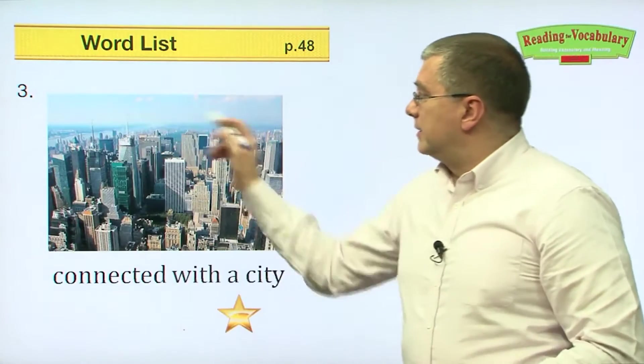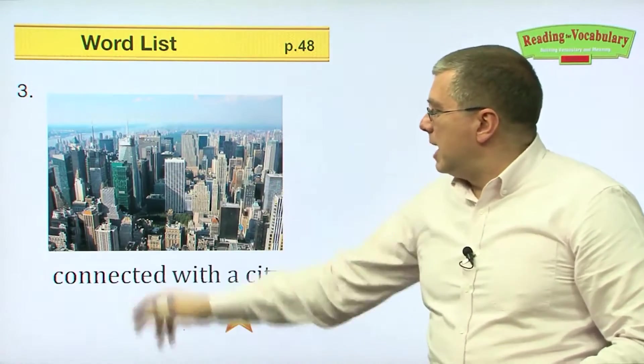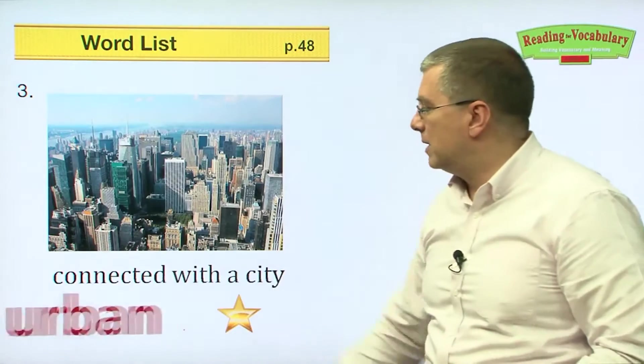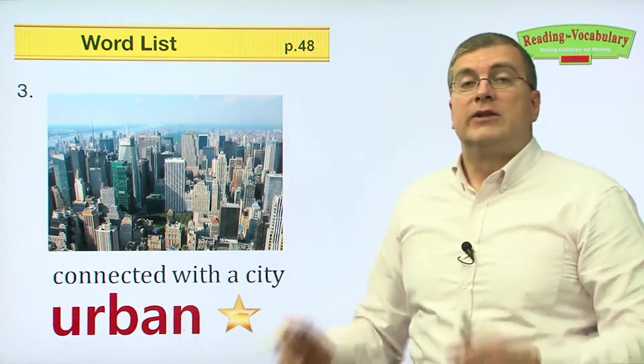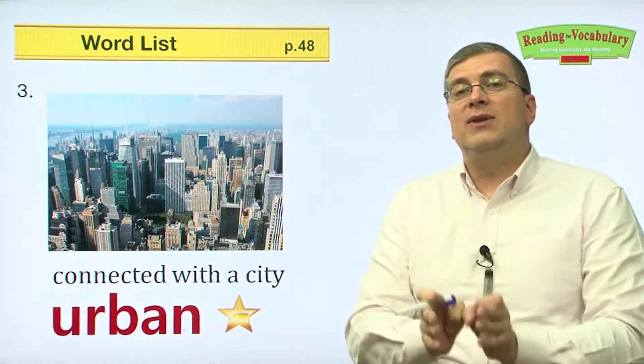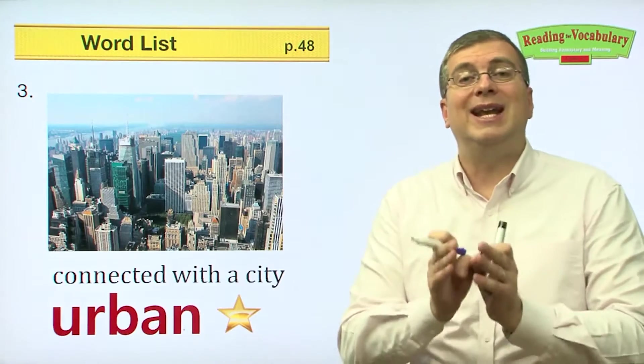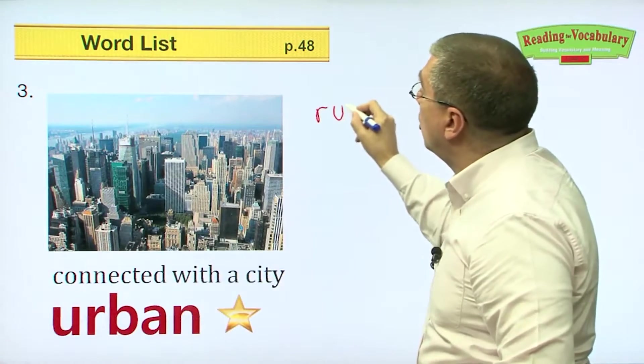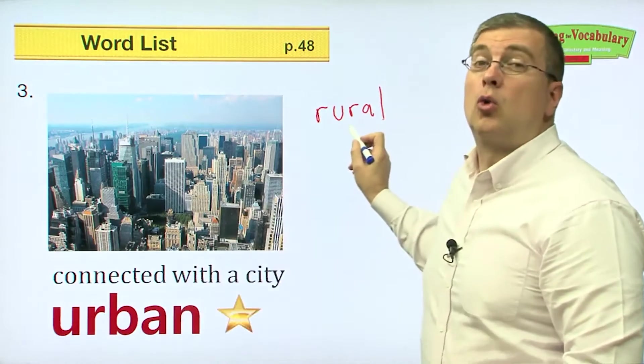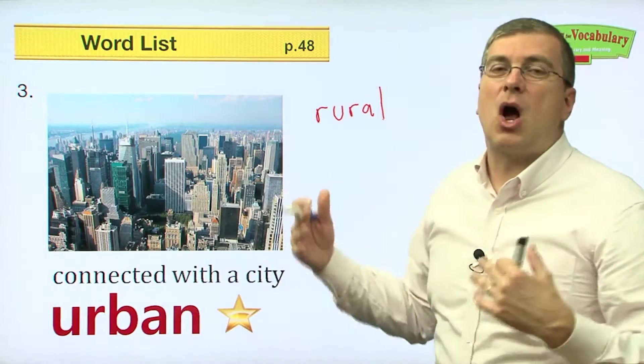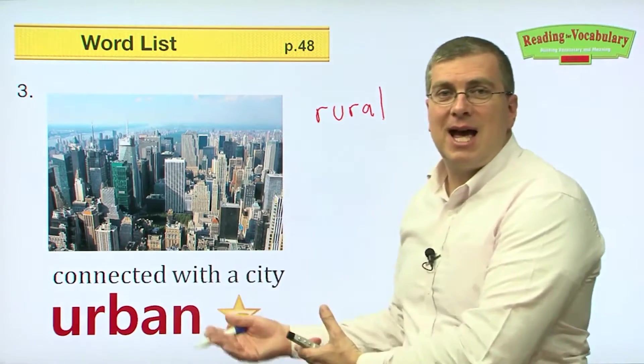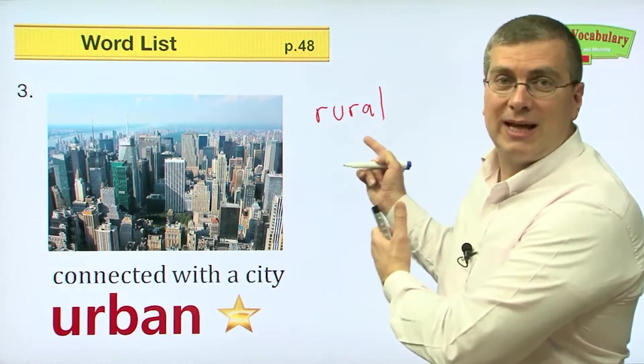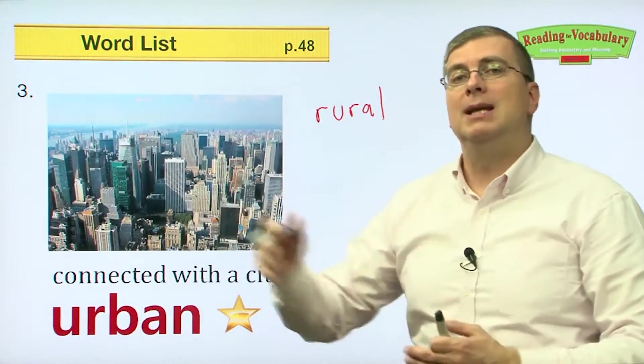Number three. This is a big city. Looks like New York. Central Park is in the background. But when we talk about all big cities, any big city connected with a city, we say urban. So if you live in a city, you are living in an urban setting. But if you live on a farm in the countryside, you are living in a rural setting. So urban and rural, pandero, they are opposites. I live in a city, I live in an urban place. I live on a farm, I live in a rural place. Rural is countryside, urban is city.